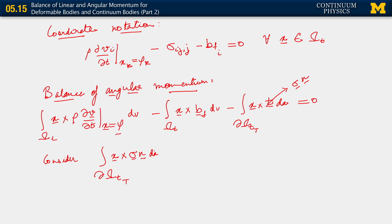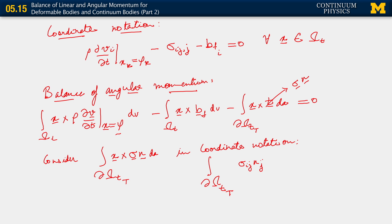In particular, what I'm going to do now is to write this term in coordinate notation. We have an integral over the traction boundary subset. Let me first write the sigma n term. Let's suppose we have sigma ij nj. Now, that's a vector, because the j index gets contracted out — there's a free index only i. That vector with free index i is being crossed by x, so let me write x sub k here.